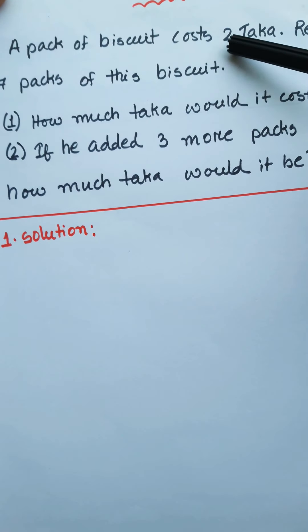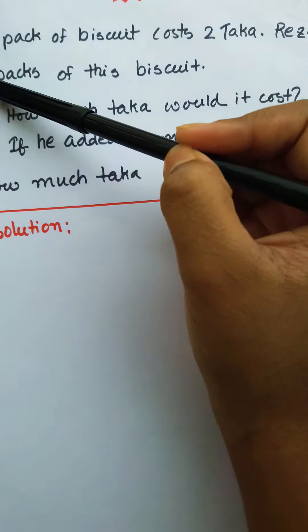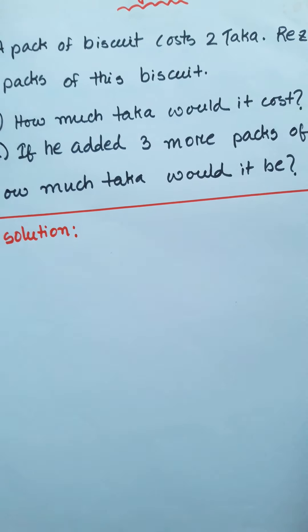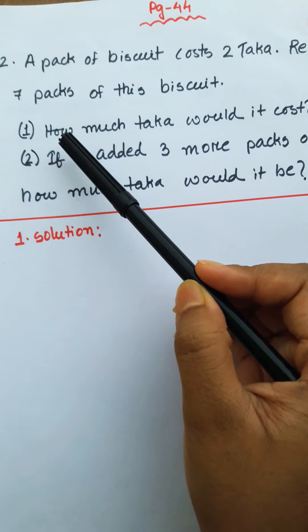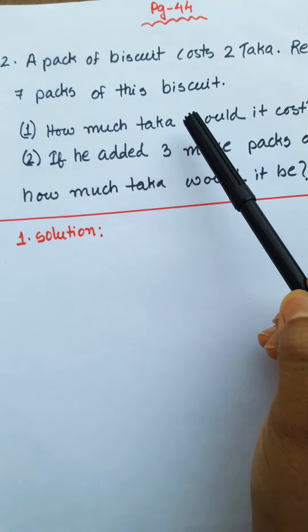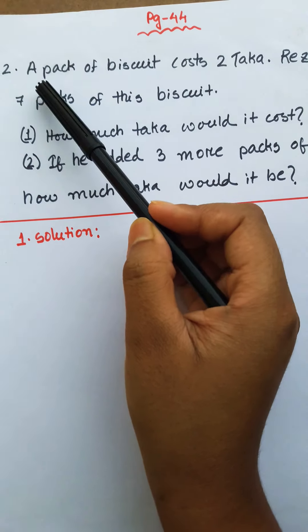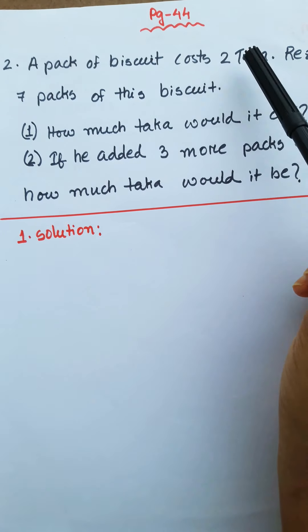A packet of biscuit costs 2 taka. Reza bought 7 packets of this biscuit. Number 1: How much would it cost? The price of 1 packet of biscuit is taka 2.